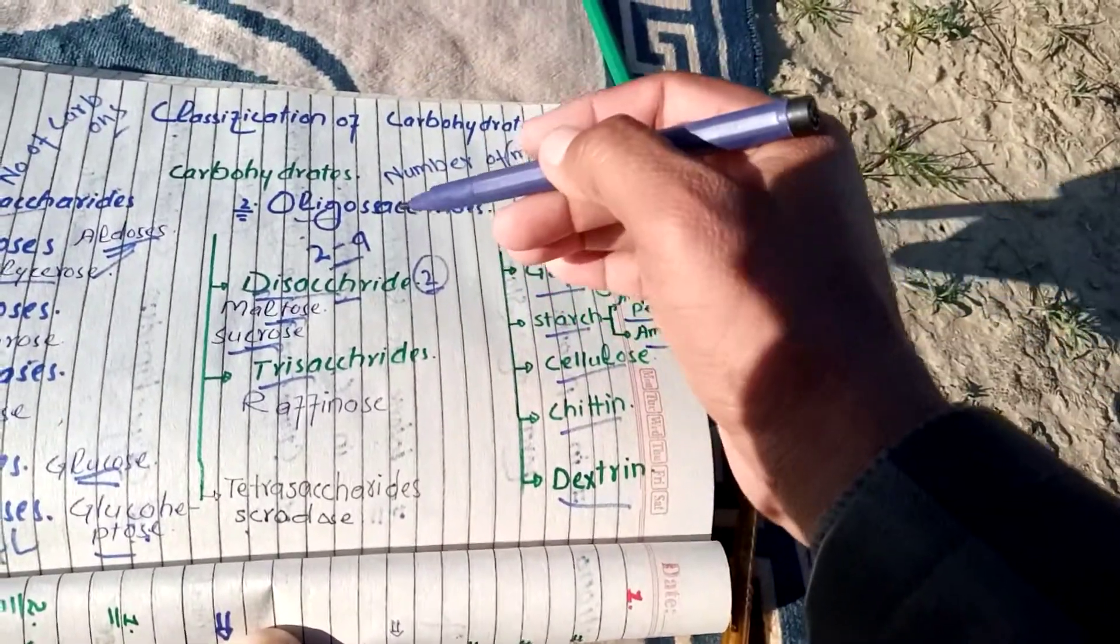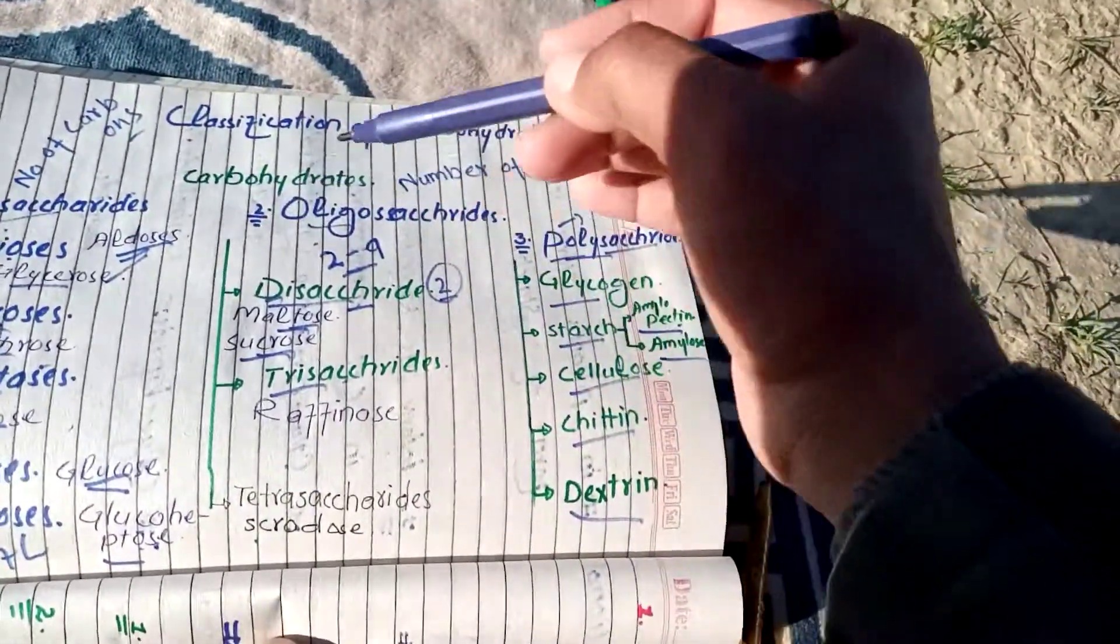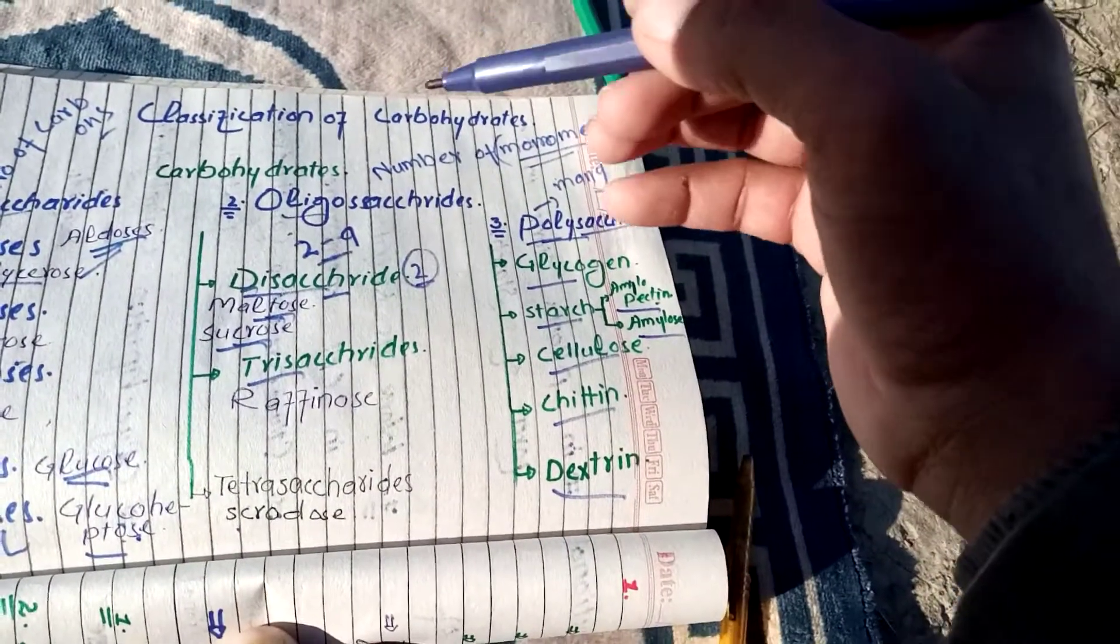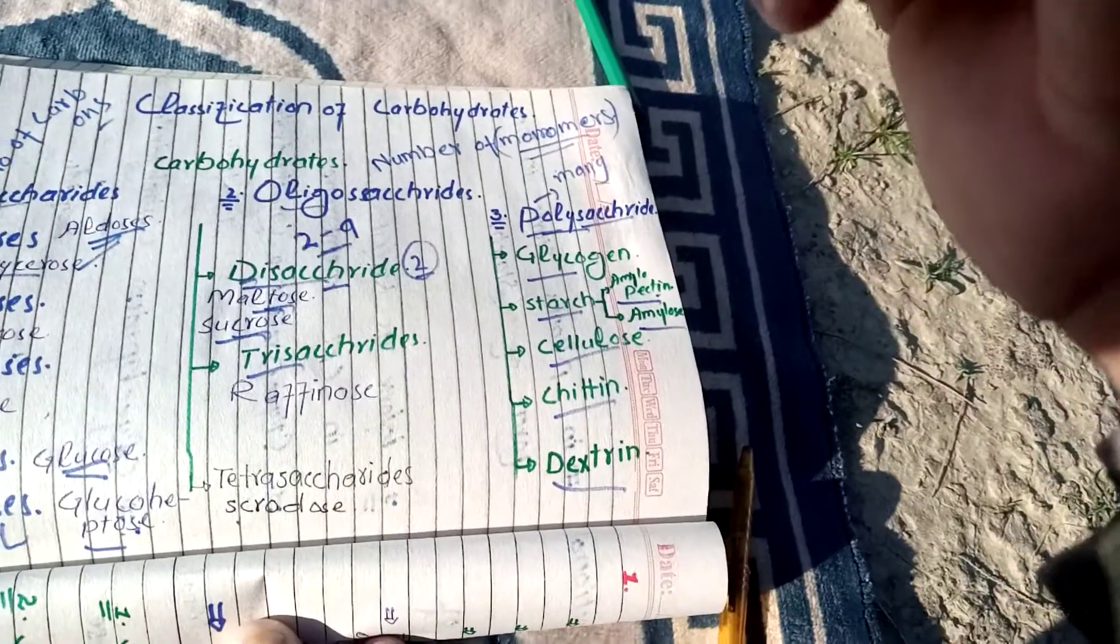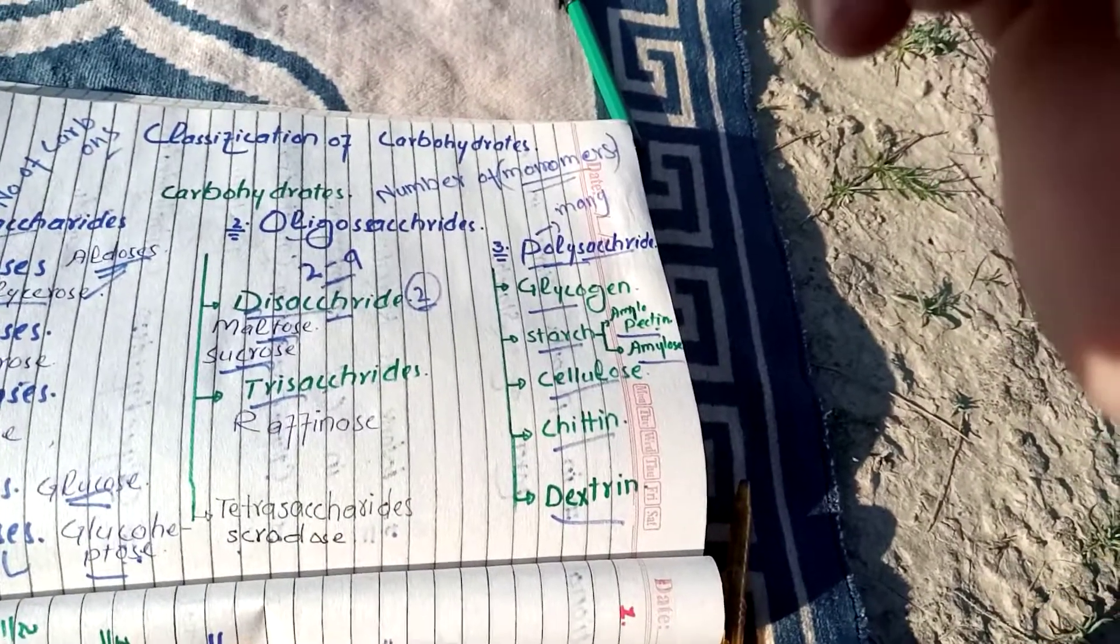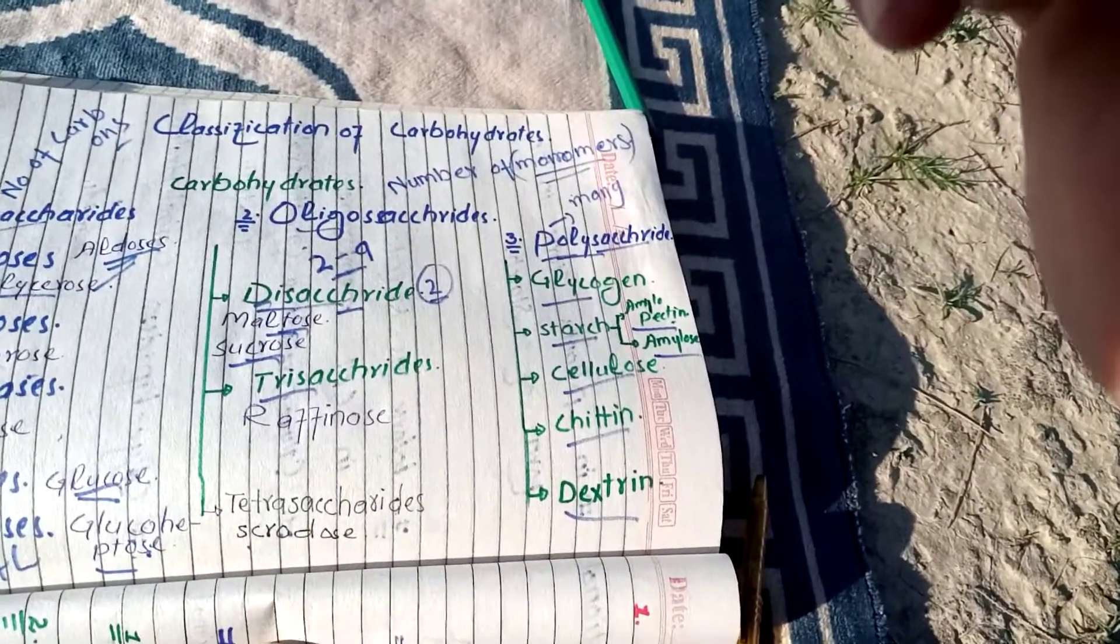Yeh sara lecture jo hai classification of carbohydrates ke baare mein hai. Inshallah agle lecture mein hum monosaccharide, oligosaccharide, polysaccharide aur phir is ki further classification jo hai inshallah is ko hum ek ek karke discuss karenge. Inshallah, thank you.